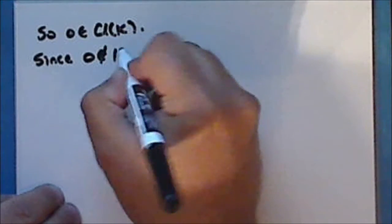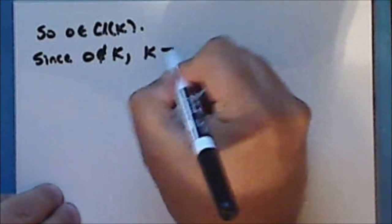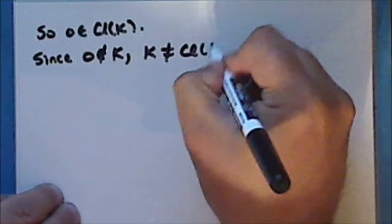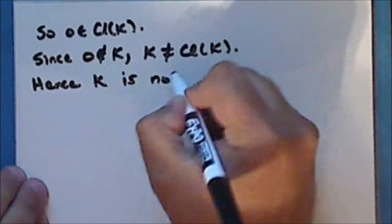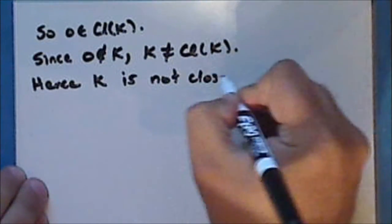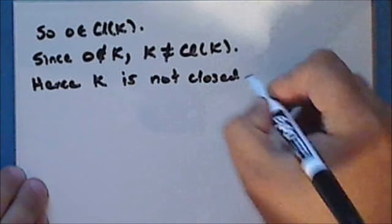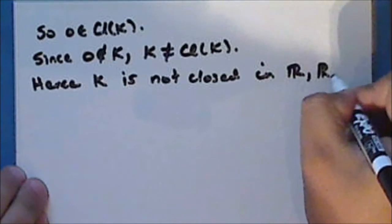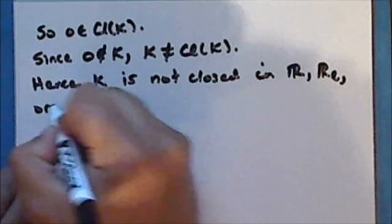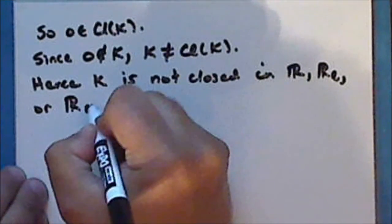Now since 0 is not in the set K, K is not equal to its closure, and hence the set K is not closed in the real line, the Sorgenfrey line, or the Michael line.